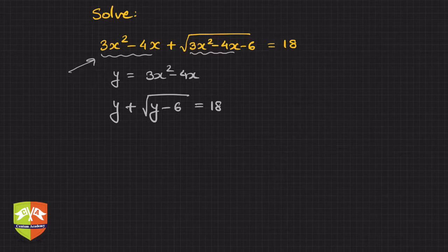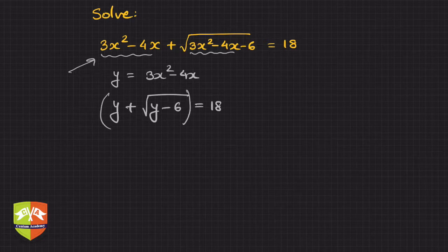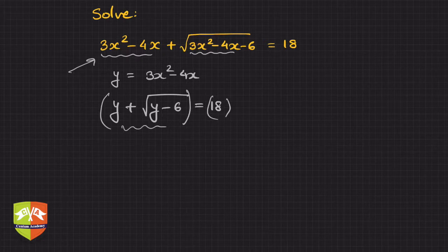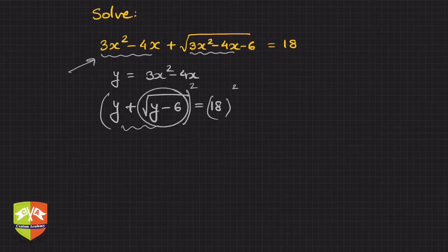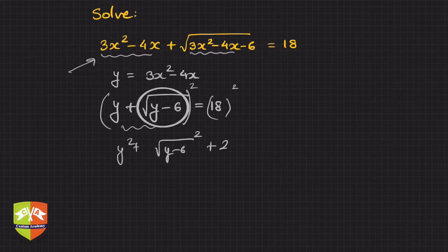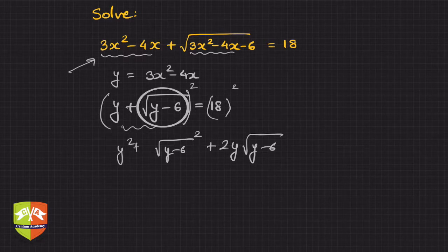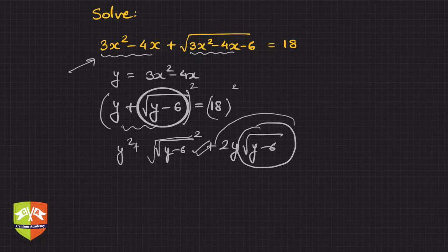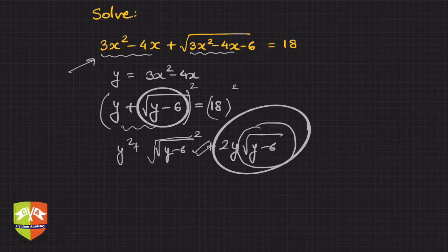How can we remove the radical? The best way to eliminate a radical is to square it. But if we square both sides in this form, we get an (a + b)² expansion: y² + (√(y−6))² + 2·y·√(y−6). This radical won't be eliminated — it comes back in the 2ab cross term. So we don't want to square directly in this form.